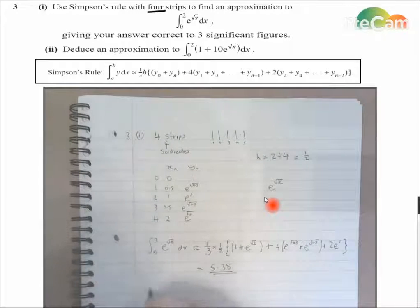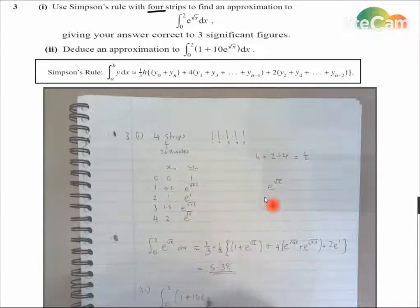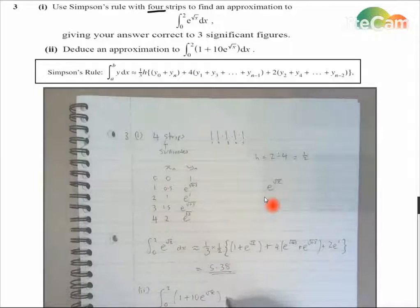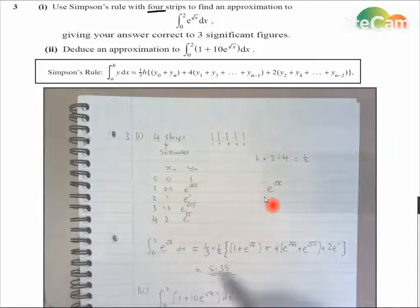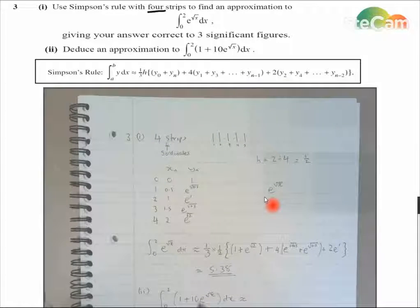Part 2. Deduce an approximation to the integral between 0 and 2 of 1 plus 10 e root x dx. Now, this is very similar to our last function. We've already integrated e root x, and we know that's approximately equal to that. If we integrate 1, we will get x, and if we integrate this, we will get 10 lots of whatever we have there.